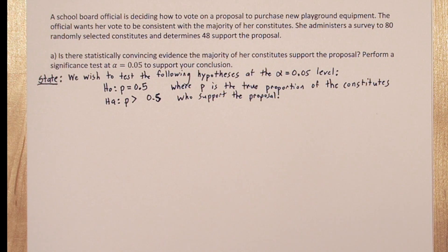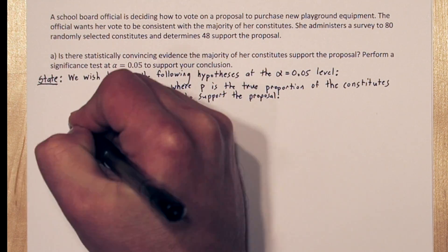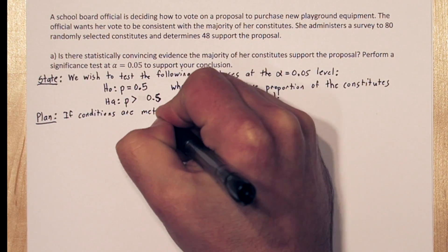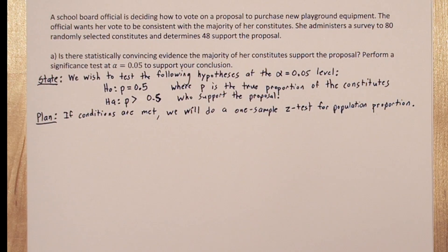In the plan step, we need to list our conditions and also our inference procedure. So if conditions are met, we will do a one-sample z-test for population proportion. That's our inference method.